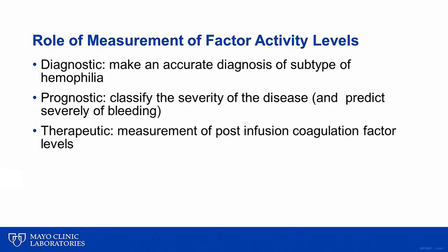Indications for measurement of coagulation factor activity assays can fall under three categories: diagnostic, prognostic, and therapeutic indications. Since hemophilia A and B are clinically indistinguishable from each other, it is important to make an accurate diagnosis based on coagulation factor assays. Based upon baseline factor activity level, the patient is classified into mild, moderate, and severe hemophilia. Patients with severe hemophilia are at a higher risk of spontaneous hemorrhage and are managed with prophylactic infusions of coagulation factor concentrates to prevent bleeding, also known as prophylaxis. Finally, accurate measurement of coagulation factor levels after infusion of clotting factor concentrates is important in order to provide cost-effective factor replacement therapy.